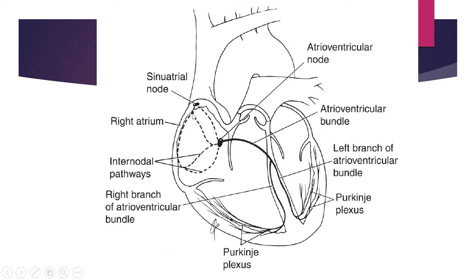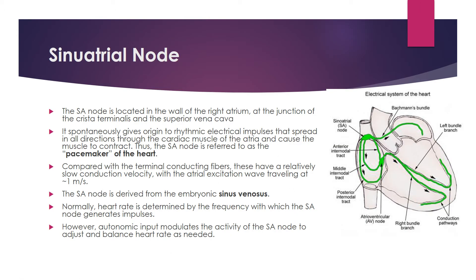When the SA node conveys the impulse to the AV node, there are three types of internodal pathways, which we will discuss further. To summarize the five components: number one is the SA node, number two is the AV node, number three is the AV bundle, number four is the right and left bundle branches, and number five is the Purkinje fibers.